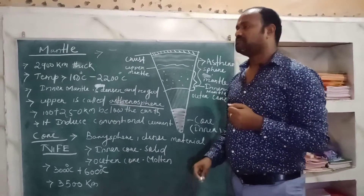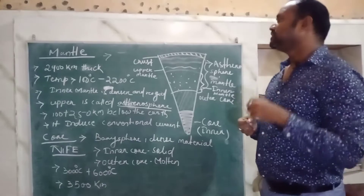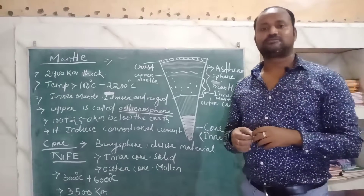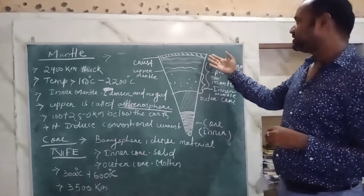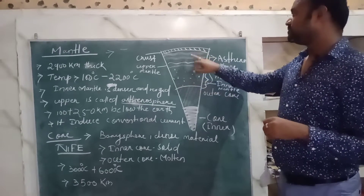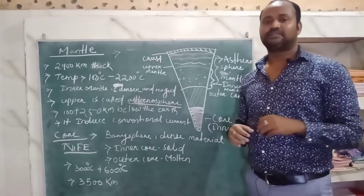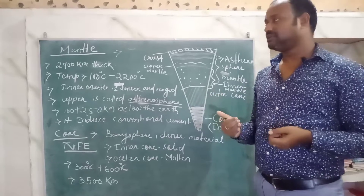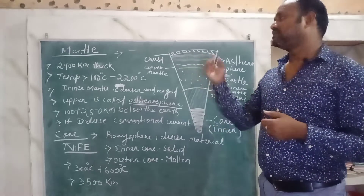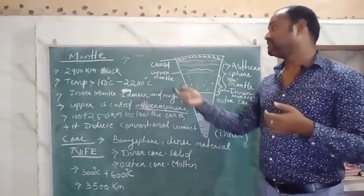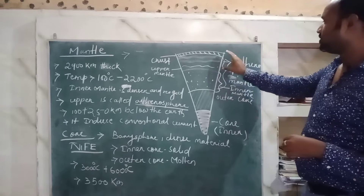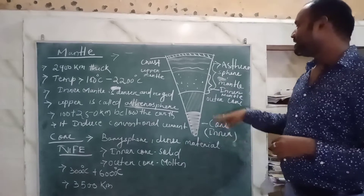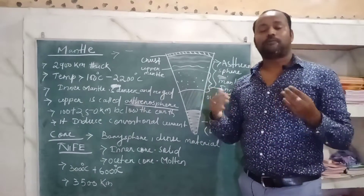Next, let's discuss the mantle. The mantle is the layer lying between the crust and the core. It is about 2900 kilometers thick. The temperature varies according to depth, from 100 degrees Celsius to 2200 degrees Celsius. The mantle has two parts: the upper mantle and the lower mantle. The upper mantle is known as the asthenosphere.